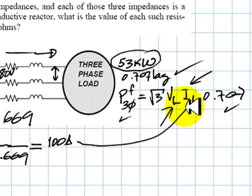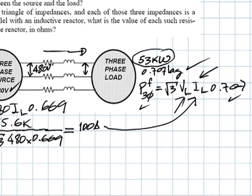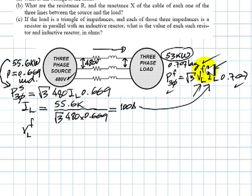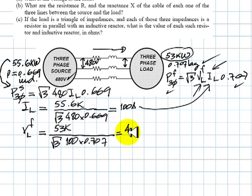100 amps. That is the current in the line. With that current, we obtain that the voltage VF at the factory is 433 volts. The line-to-line voltage at the source, 433 volts. That takes care of part A of the exam.